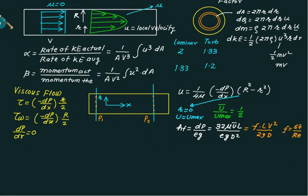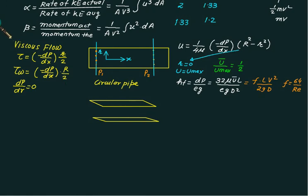Consider two parallel plates separated by distance t with a viscous fluid in between. For parallel plates, the governing equation is given as tau equals minus dp/dx × (t/2 - y).